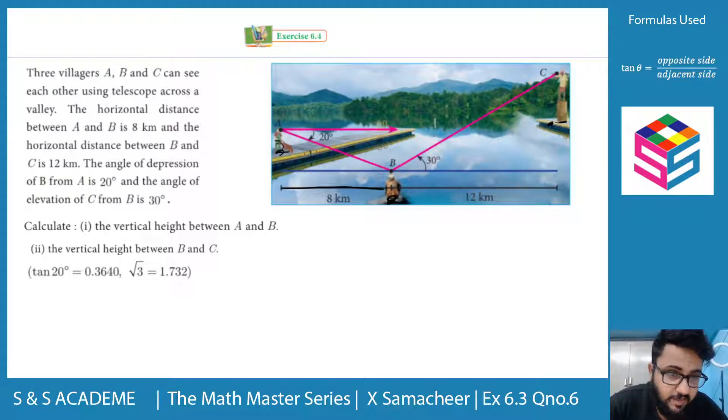If you look at this, there are 3 villages. There are 3 villages over wire as shown in this diagram. This is the horizontal distance. There are 8 kilometers, 12 kilometers. A to B is 8 kilometers. B to C is 12 kilometers.